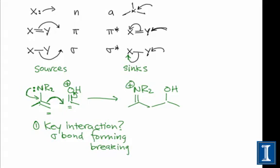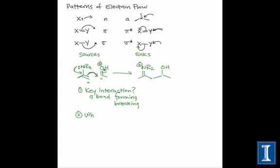So the question then becomes, what are the source and sink for the key interaction? And you may wonder why it's useful at this point to classify the curved arrows according to some labeling scheme. And the answer is, it allows us to connect reactions that look on the surface different.